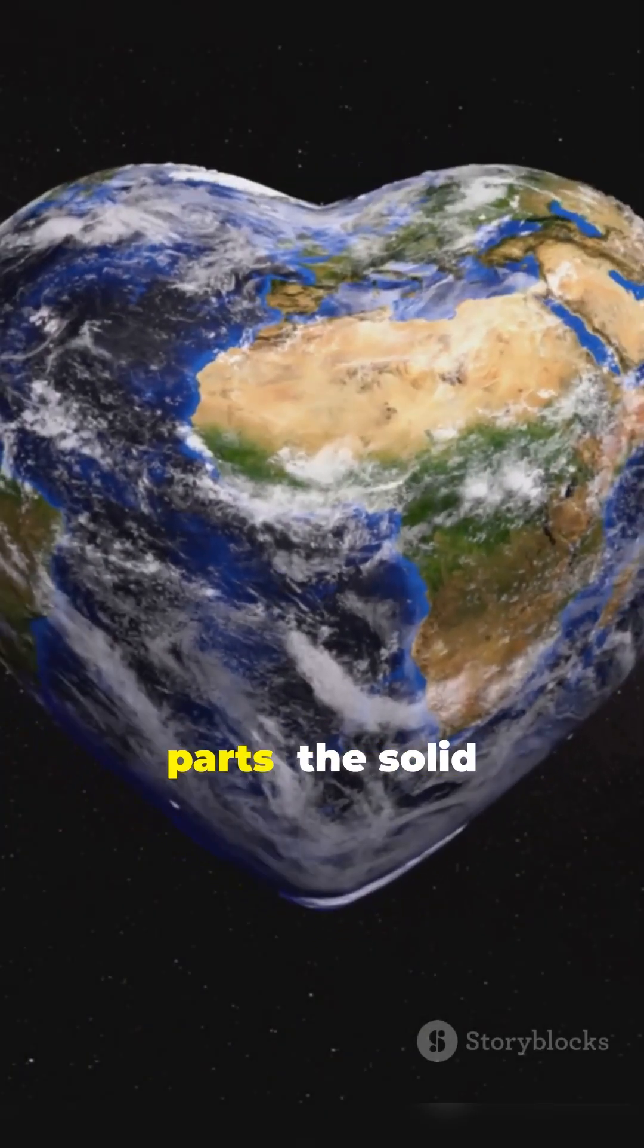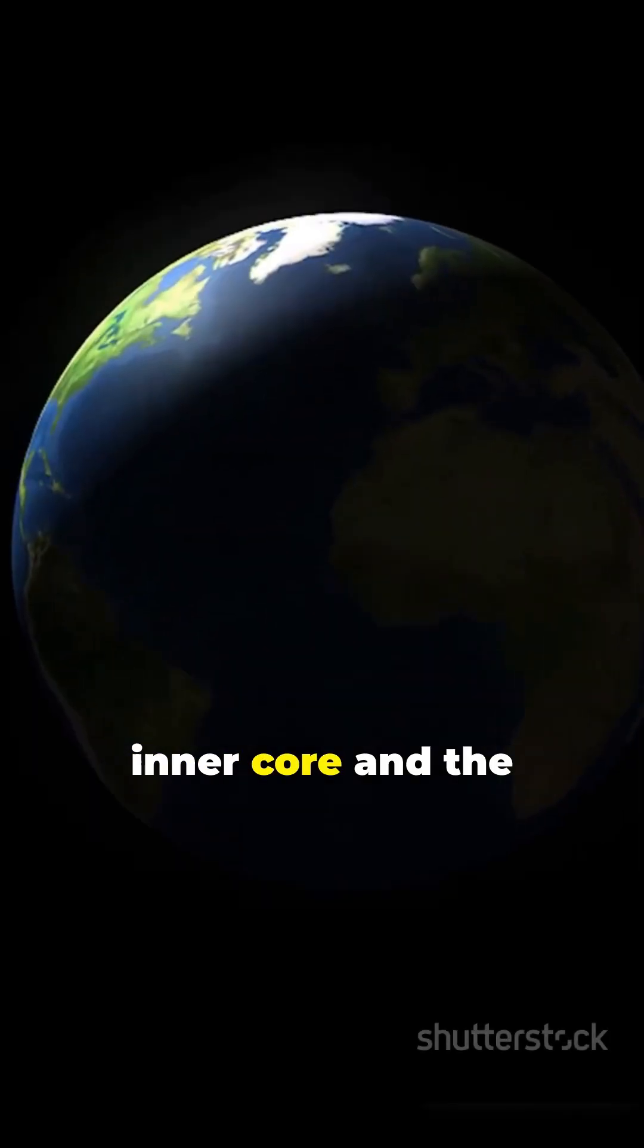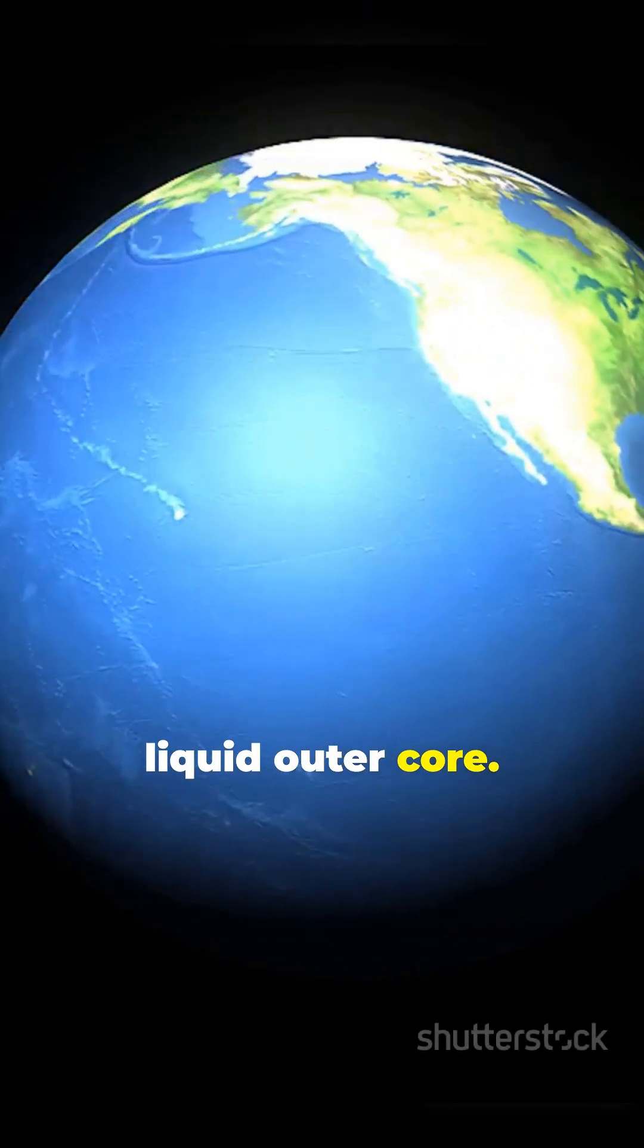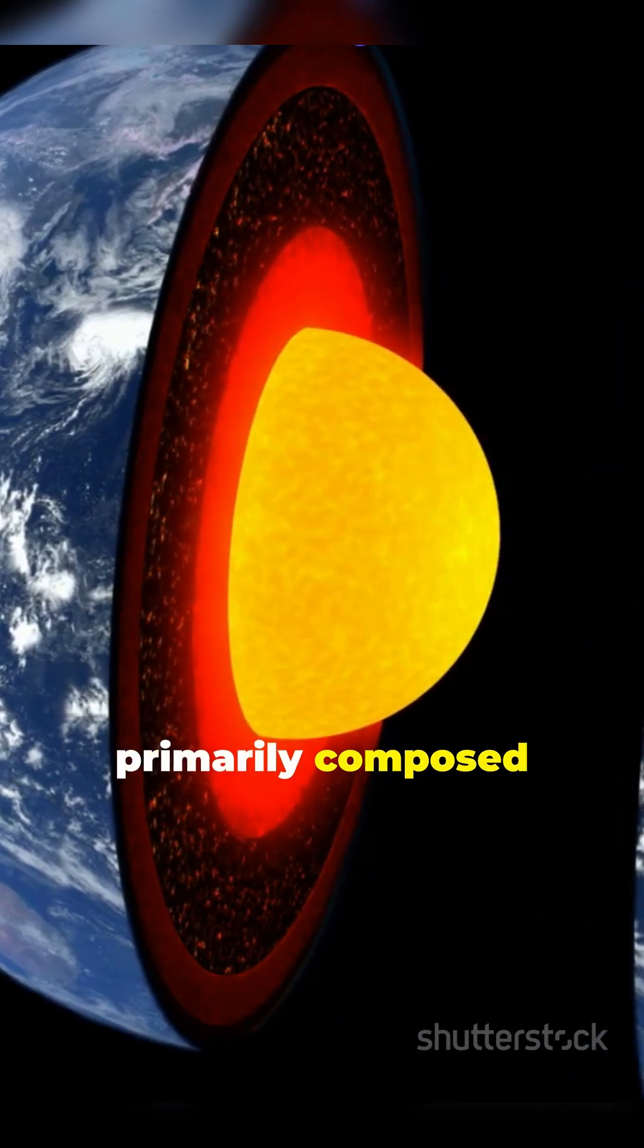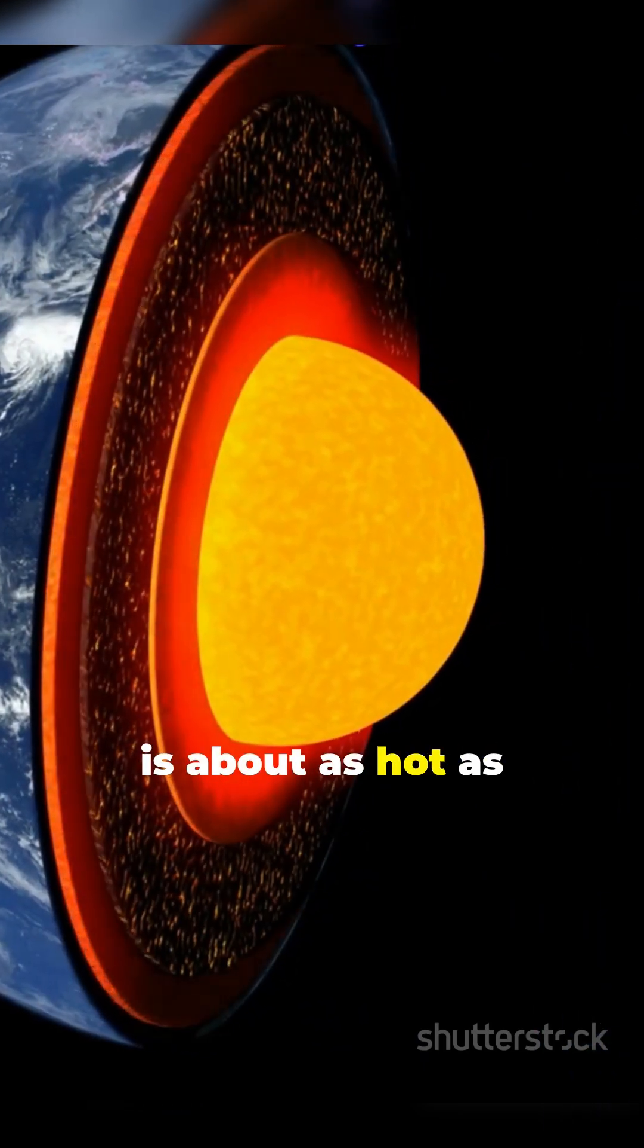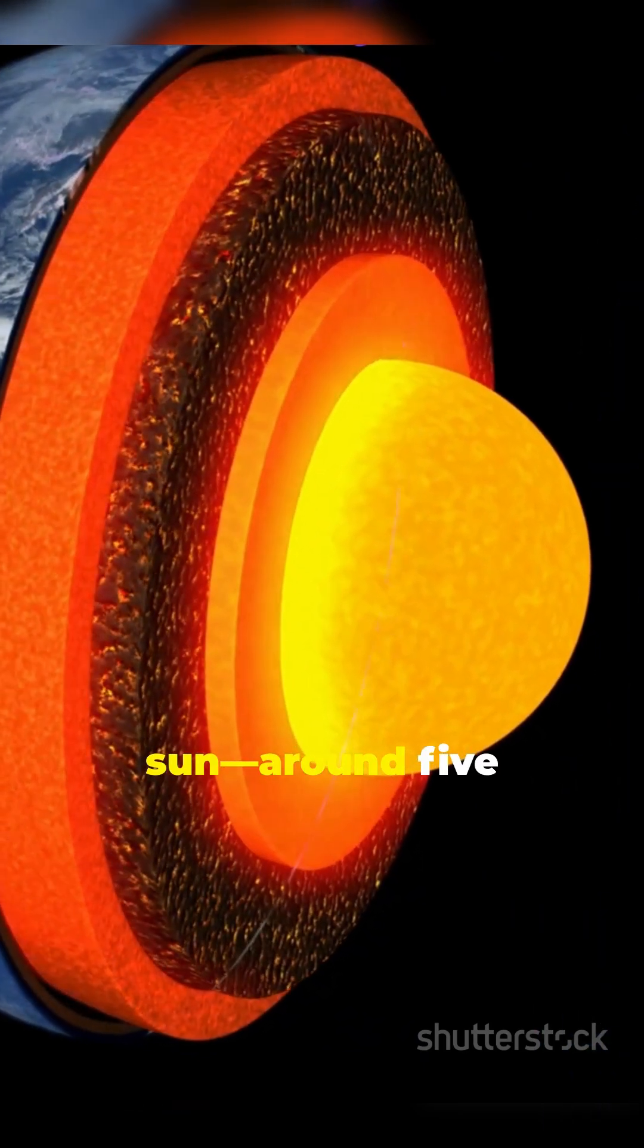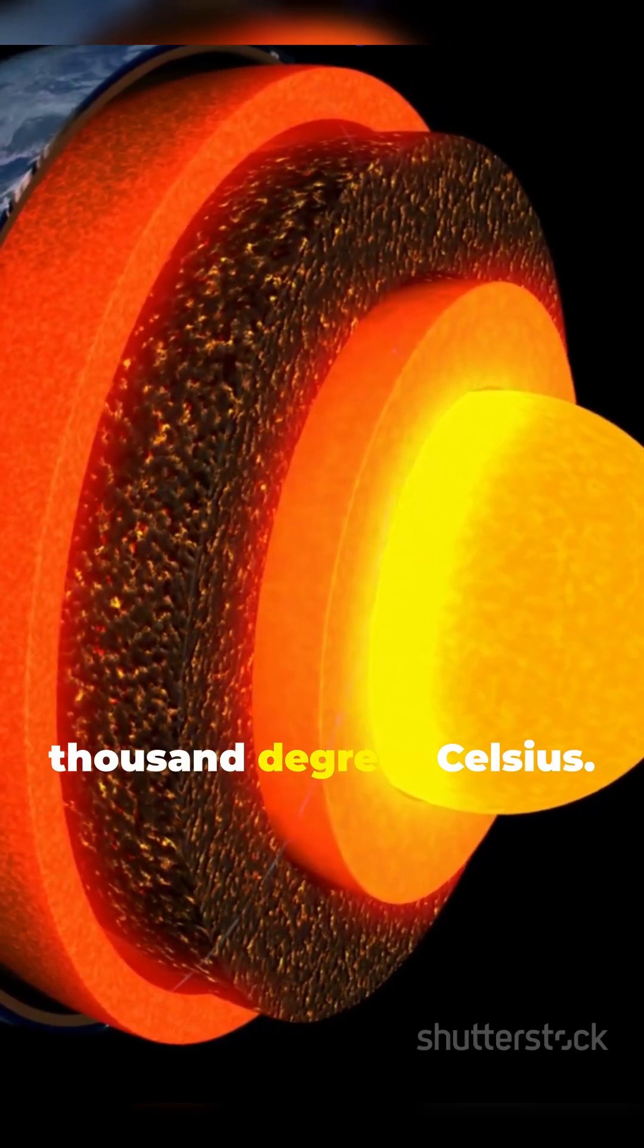The Earth's core is divided into two parts, the solid inner core and the liquid outer core. The inner core, primarily composed of iron and nickel, is about as hot as the surface of the Sun, around 5,000 to 6,000 degrees Celsius.